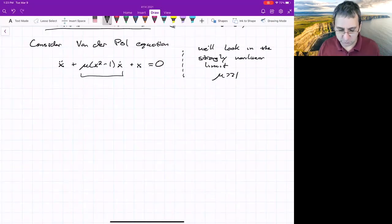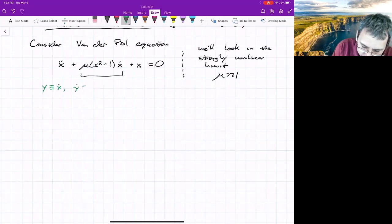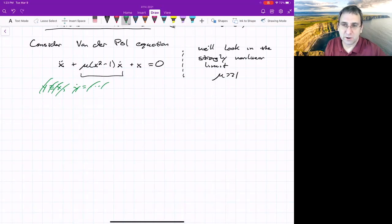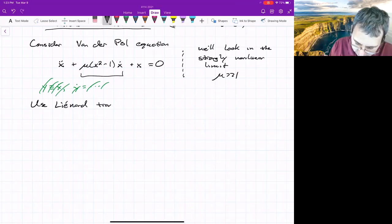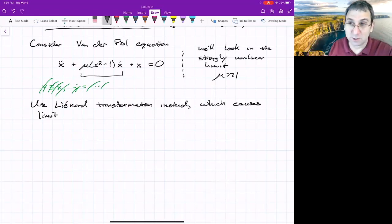Now, the usual way that we've written equations like this that are second order is we write them in a first order form. We'll say that we'll define y is x dot, and then we'll write y dot equals something. We're not going to do that this time. So we're not going to use the usual phase plane variables. We're going to use, in some sense, a tricky transformation, and it's due to Liénard. So we'll use the Liénard transformation. And the advantage of this is that it causes the limit cycle to approach a constant shape as mu goes to infinity, and we'll make use of nullclines as well.